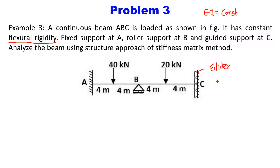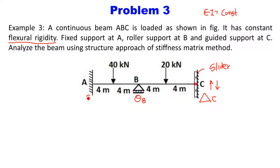The guided support allows point C to move vertically up and down. This means the kinematic unknown at the guided support is only one — delta, the vertical displacement. So delta_C is the kinematic unknown at the guided support. Remember, guided support will not rotate; there is no rotation at guided support, only one kinematic unknown delta. At roller support, the kinematic unknown is only one but it is rotation — theta_B. At fixed support, there are no kinematic unknowns.